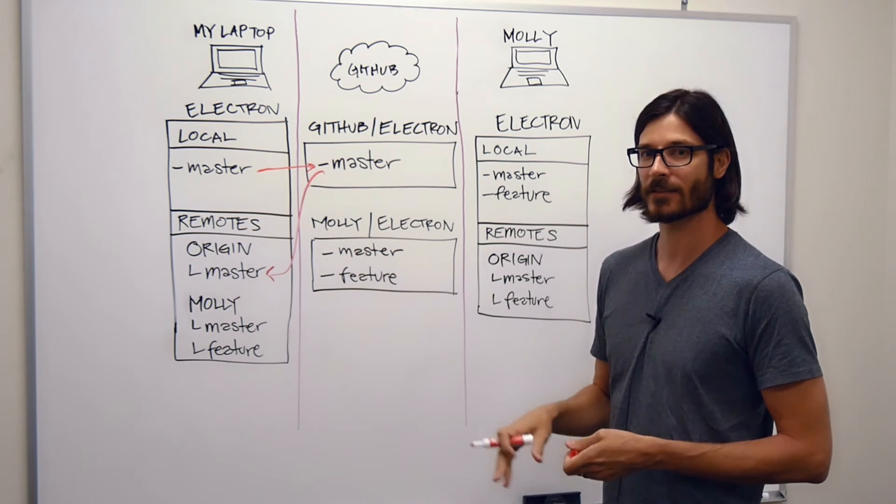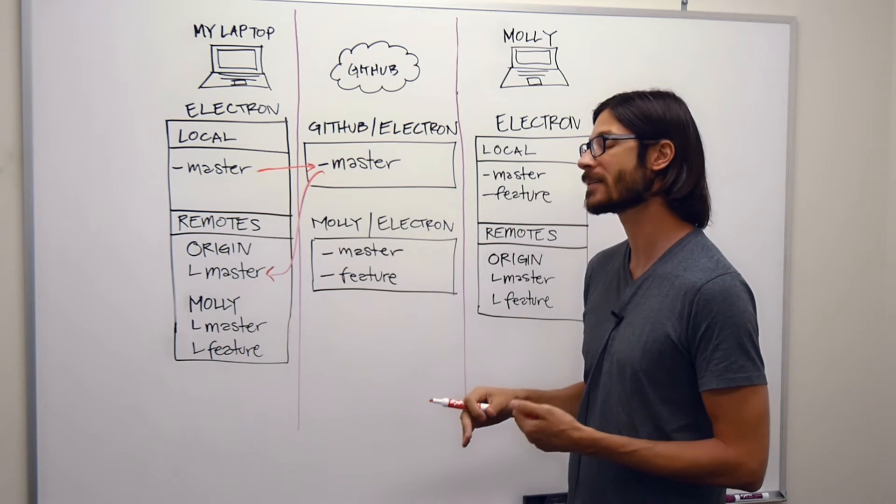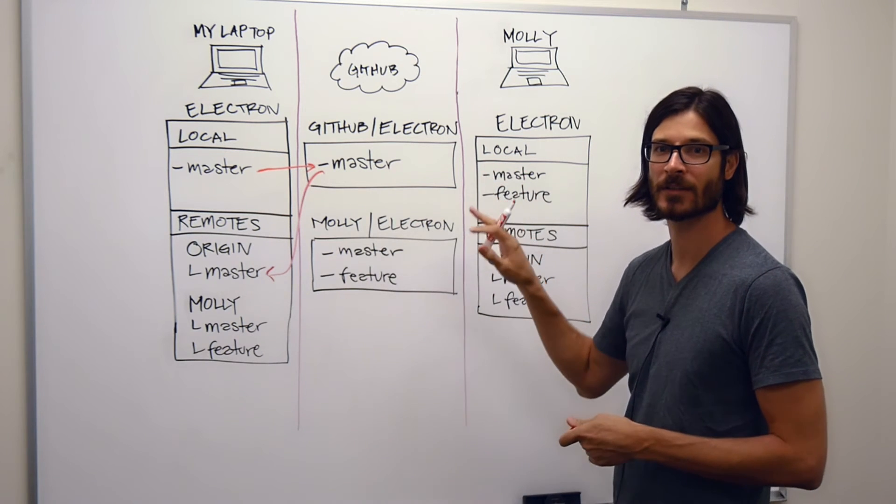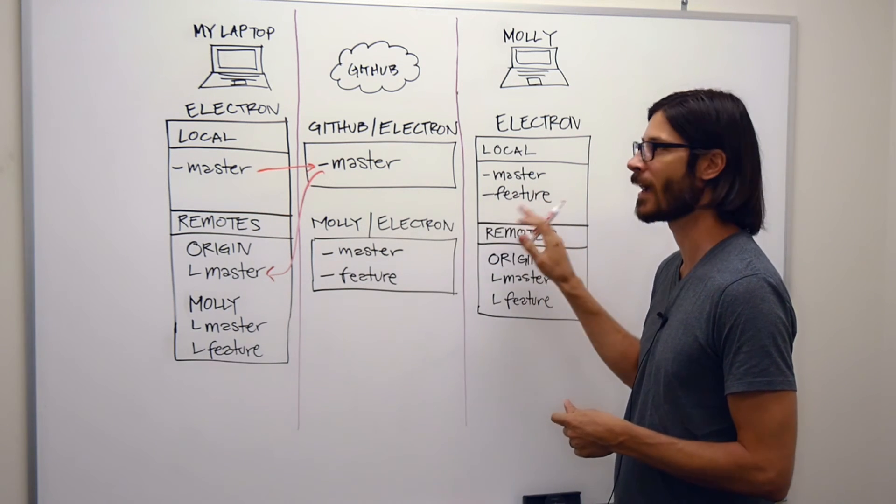That's cloning. The second way that you can do this is with adding, and adding will basically explicitly set another person's or some other remote or some other repository as a remote.